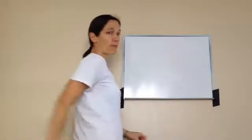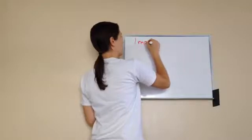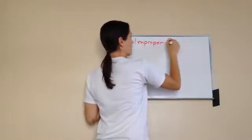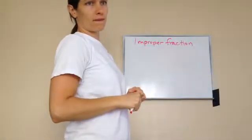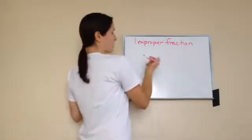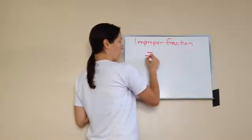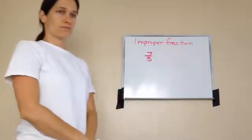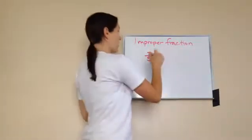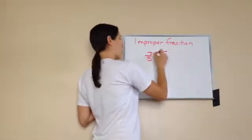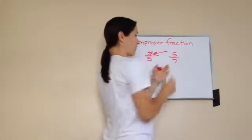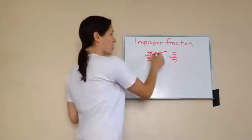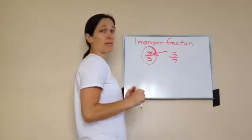Let's talk about improper fractions. Do you remember what that is? It's like 1 and 7 over 5. Let's just talk about 7 over 5. What's wrong with this? There's a bigger number on top. Whenever you're working with fractions, you do not ever want a bigger number on top. 5 sevenths is fine because the bigger number is on the bottom. When you have a bigger number on top, it's called an improper fraction.